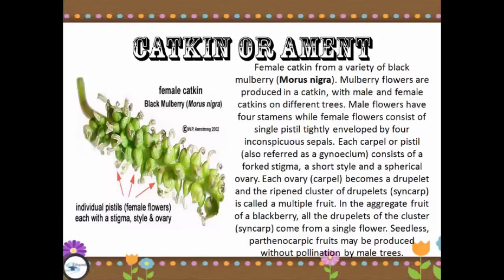This is the female catkin from a variety of black mulberry. Mulberry flowers are produced in a catkin with male and female catkins on different trees. Male flowers have four stamens, while female flowers consist of a single pistil tightly enveloped by four inconspicuous sepals. Each carpel or pistil consists of a forked stigma, a short style, and a spherical ovary, and each ovary becomes a droplet in a compact cluster of droplets — also called multiple fruits. In the aggregate fruit of blackberry, all the droplets of the cluster come from a single flower. Seedless parthenocarpic fruits may be produced without pollination by male trees.